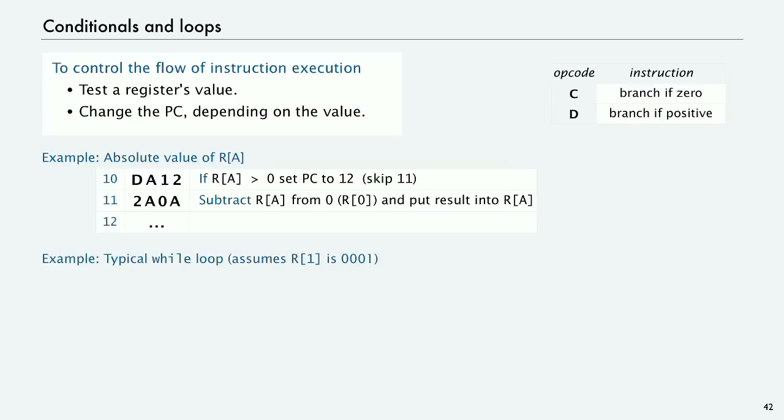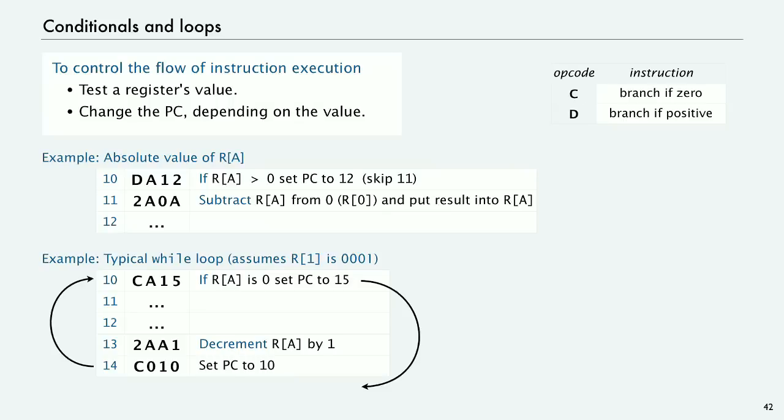So that's a conditional and a typical loop works as follows. Let's assume that register 1 has the value 1 in it. The opcode C is branch if 0 and then we test the value of register A. If it's 0, we go to 15, that's branching out of the loop. Then we have whatever our loop instructions might be. And then we'd have somewhere a subtract instruction which says 2 is subtract. 1 has the value 001, A has got some value, subtract 1 from it and put the result back in A. That's decrementing register A by 1. And then after you do that, do a branch if 0 on register 0 which always succeeds and sets the PC to 10.